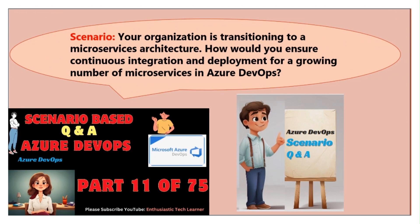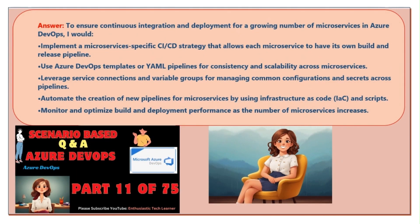Scenario eleven: your organization is transitioning to a microservices architecture. How would you ensure continuous integration and deployment for a growing number of microservices in Azure DevOps? To ensure CI/CD for a growing number of microservices, I would implement a microservices-specific CI/CD strategy that allows each microservice to have its own build and release pipeline. Use Azure DevOps templates or YAML pipelines for consistency and scalability across microservices.